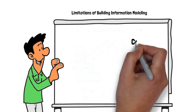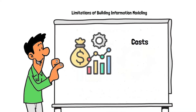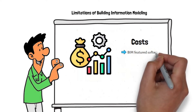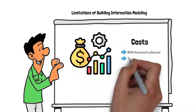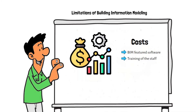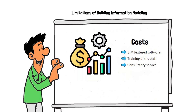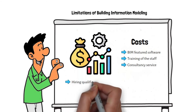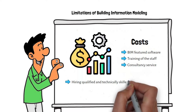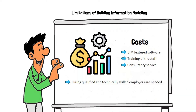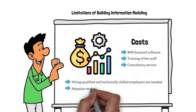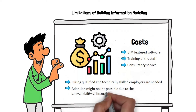Costs: The adoption of BIM is a costly process. First, an initial investment is needed to buy BIM-featured software. After that, staff training is required for the new software and new work strategy. In the early phase, consultancy services might be required for BIM implementation. Finally, hiring qualified and technically skilled employees is needed. For a small-scale company, BIM adoption might not be possible due to the unavailability of financial resources.